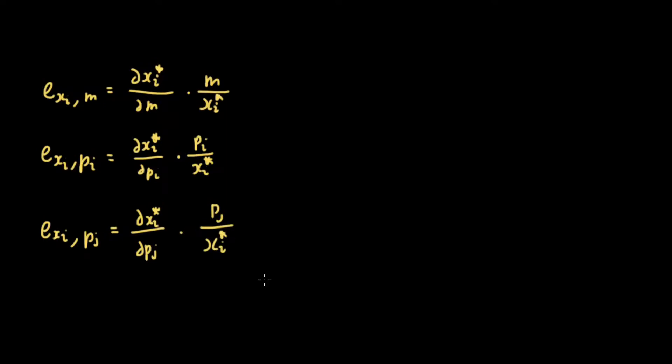Recalling from more basic microeconomics classes, the demand curve has price on the y-axis and quantity on the x-axis, and it is downward sloping because of the law of demand — as price increases, quantity demanded decreases. So we know that the own price elasticity of demand is actually less than zero, unless the good is a Giffen good.